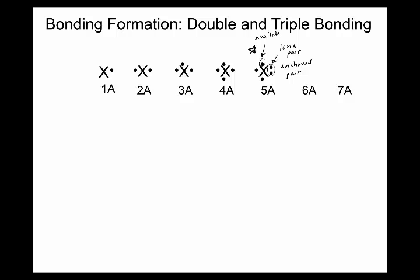Single dots are available for pairing to match another single electron on another element for covalent bonding. For example, nitrogen from 5a has one unshared pair and three single dots, and it will use those three to form bonds. 6a has two unshared pairs and two dots available for bonding. 7a, the halogens, can only make one dash because they only have one single dot, and they have three unshared pairs.